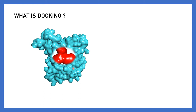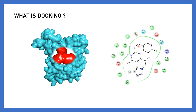When a ligand comes and binds to the protein, either it stimulates the protein or it inhibits the protein. This happens because some kind of interactions take place between the ligand and the protein. Here you can see the 2D representation I have given for better understanding. When the ligand is coming and binding to the protein, an intermolecular complex is formed. This involves the interaction between the atoms of the ligand and the residues of the protein.